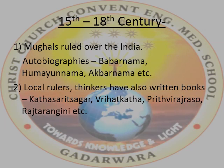From the 15th to 18th century, the Mughals ruled almost over the whole of India. They had written their autobiographies — autobiography means the story of a person's life written by himself — like Babarnama, Humayunama, and Akbarnama. The court writers of local rulers and thinkers have also written books like Katha Saitsagar, Vrihat Katha, Prithviraj Raso, and Raj Tarangini.